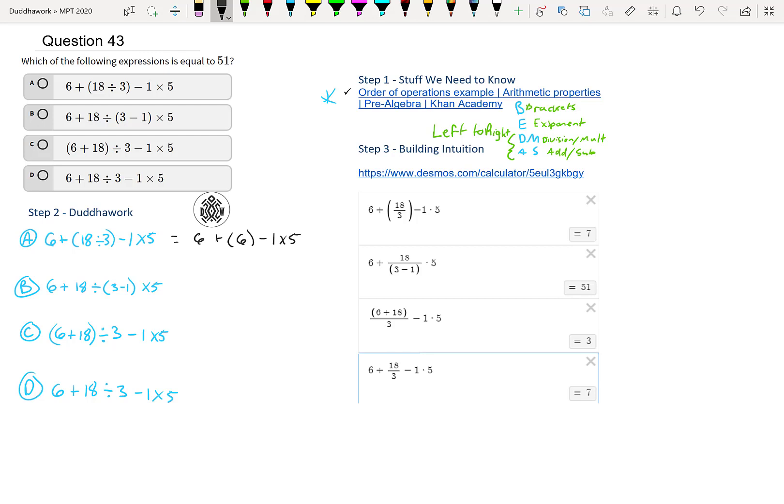Then we have 6 plus 6 minus 1 times 5. So we move on to the multiplication left to right, and that's the 1 times 5. So we have 6 plus 6 minus 1 times 5, that's 5. So then we have addition and subtraction, that's the next level. So it'd be 12. So we go from left to right, so that'd be 12 minus 5. And 12 minus 5 is 7. So we know it is not A, because it's not equal to 51.